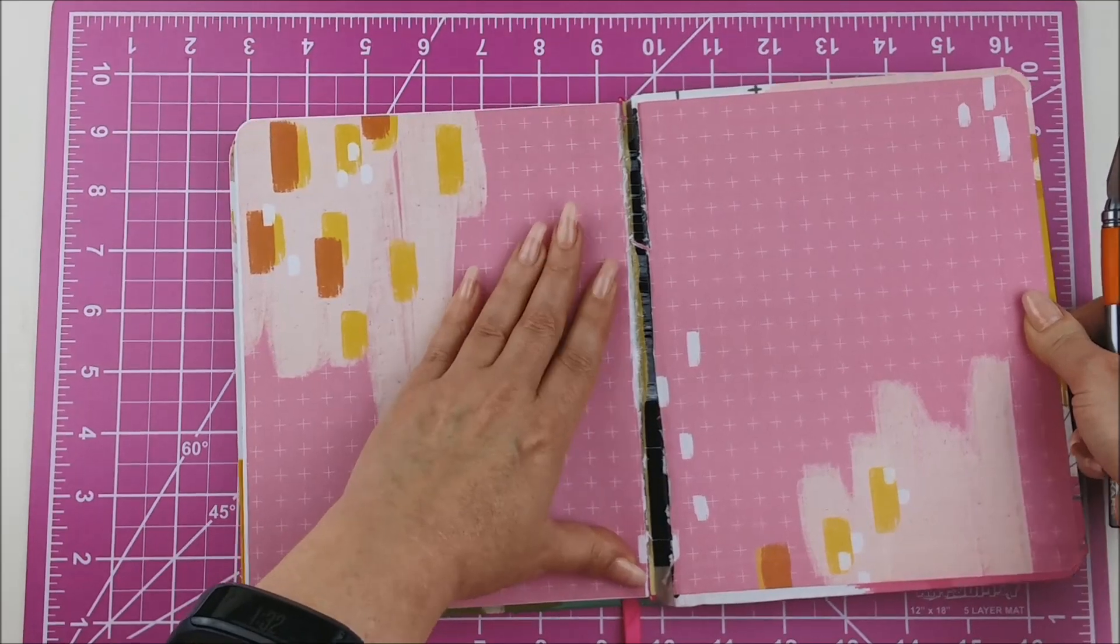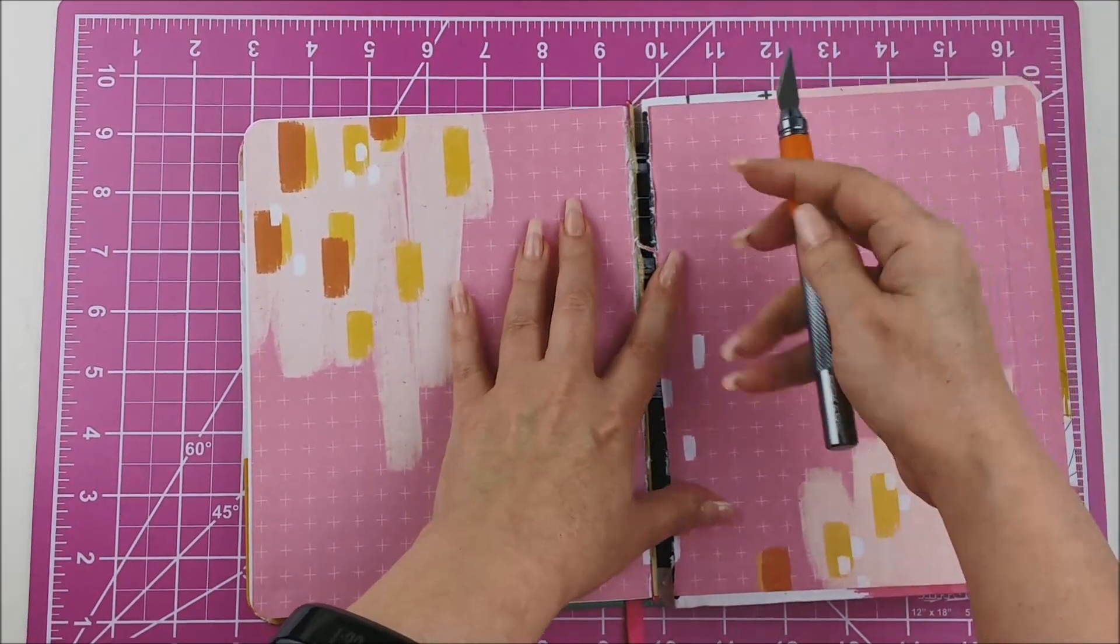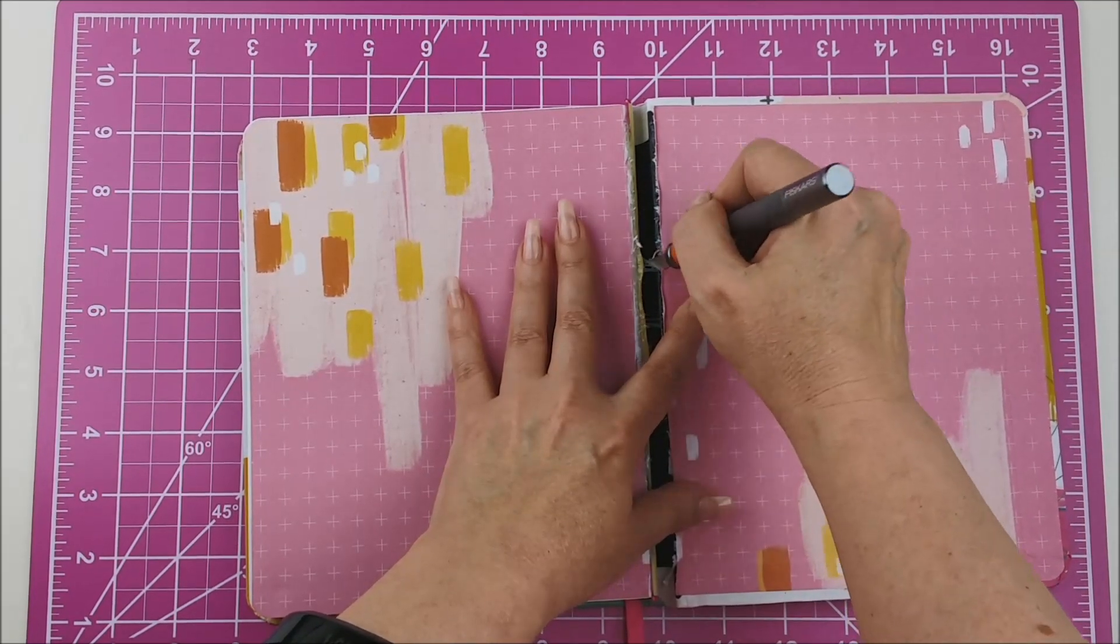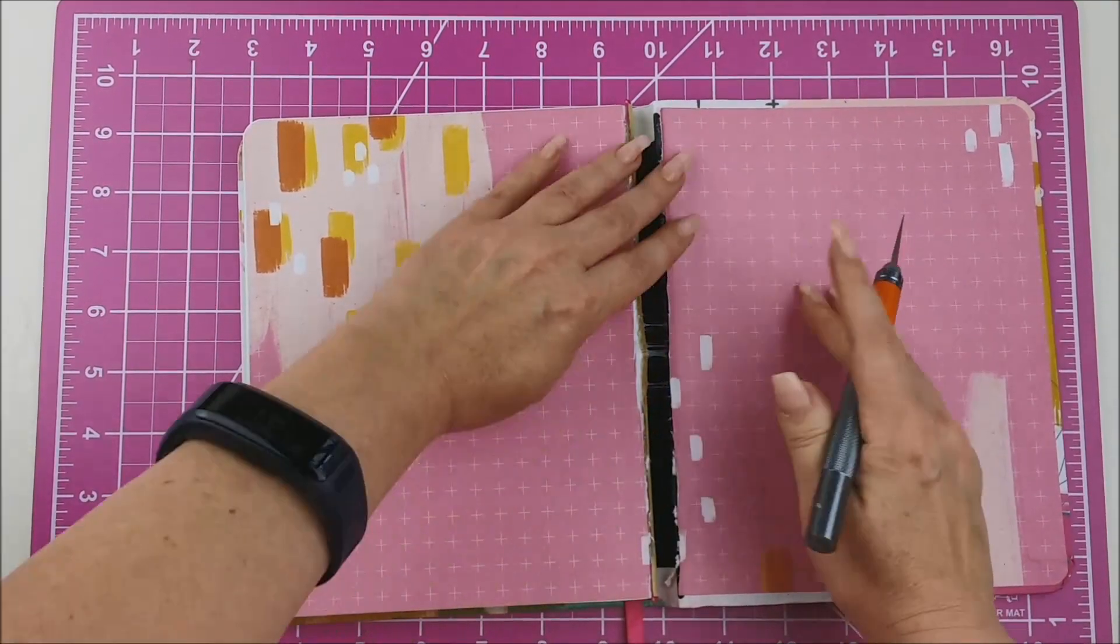The glue kind of stuck it back together, and I just cut it. Right now, I'm just cutting the glue, but this is how I cut that seam, like that.